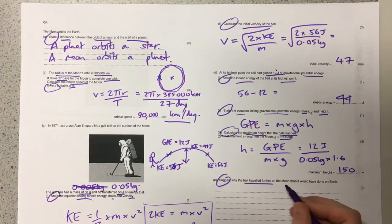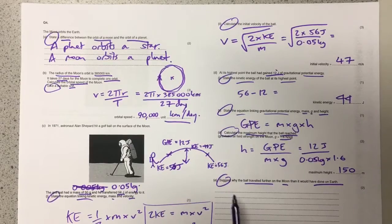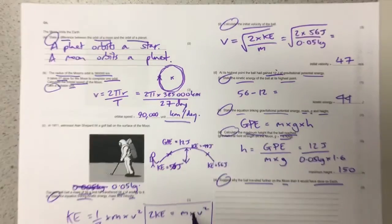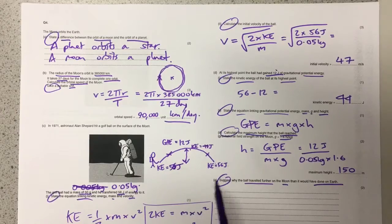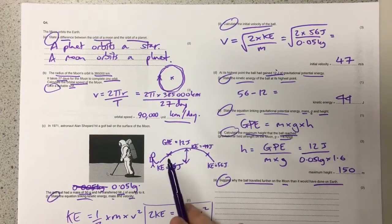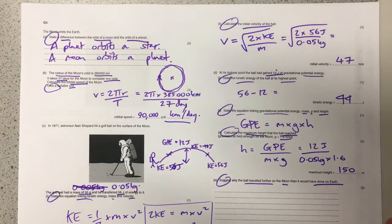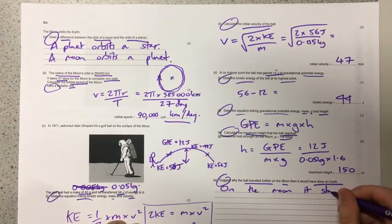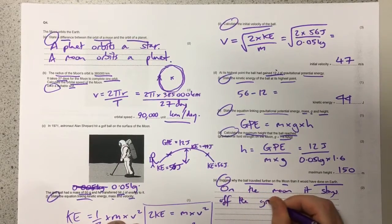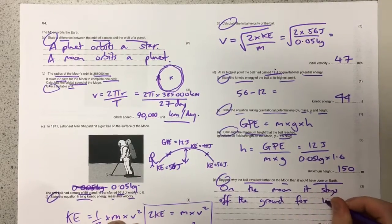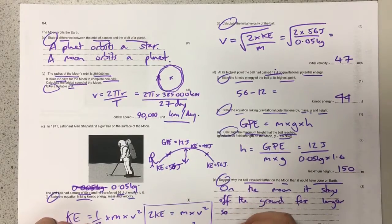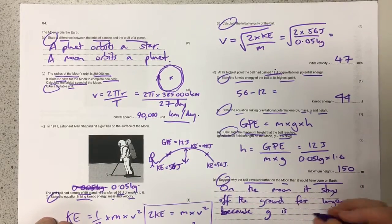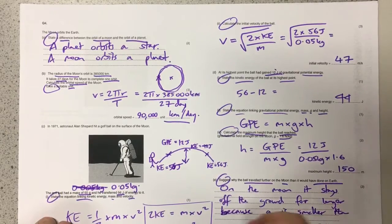Part A asks to suggest why the ball traveled further on the moon than it would have done on Earth. Well, on the moon, because the acceleration due to gravity isn't pulling it back down to the Earth, it stays in the, well not really air on the moon, it stays off the ground for longer. So if it stays off the ground for longer, it can travel this distance for longer as well. So on the moon it stays off the ground for longer because g, the acceleration due to gravity, is smaller than on Earth.